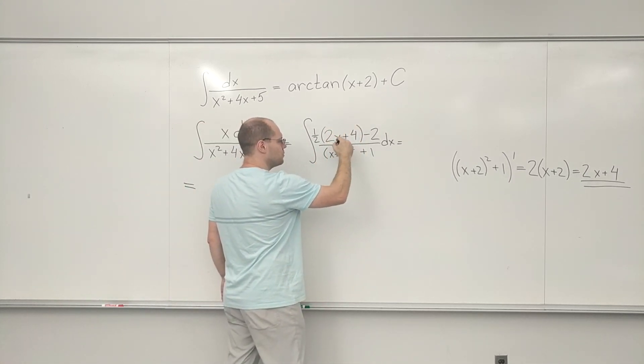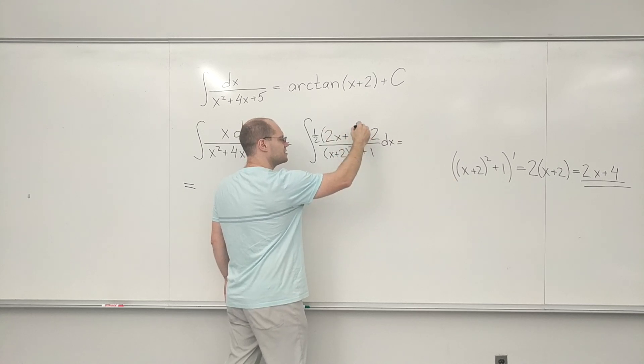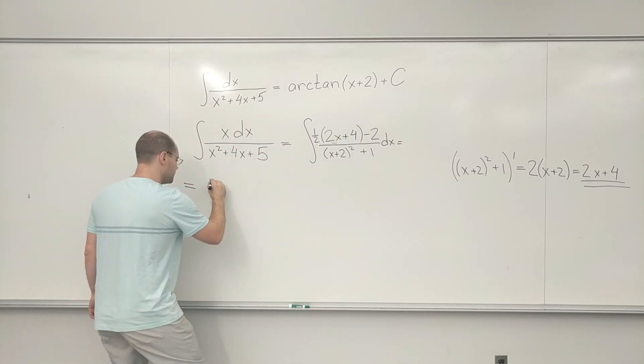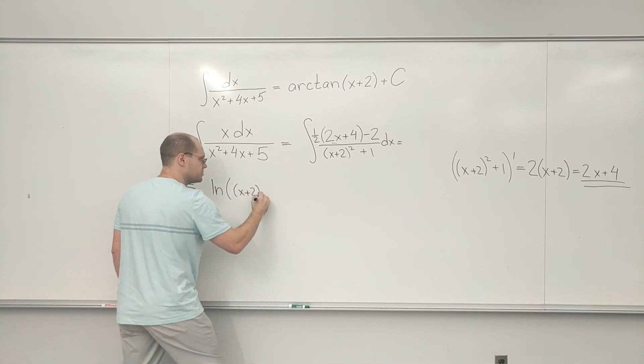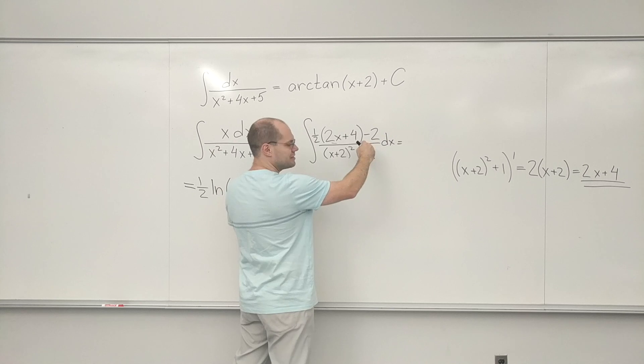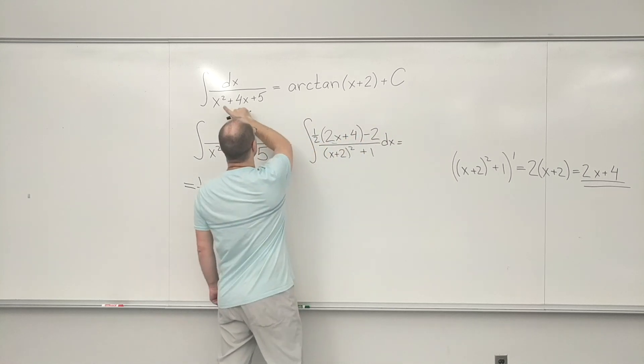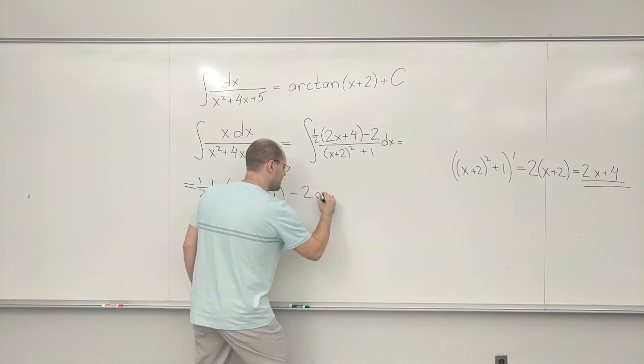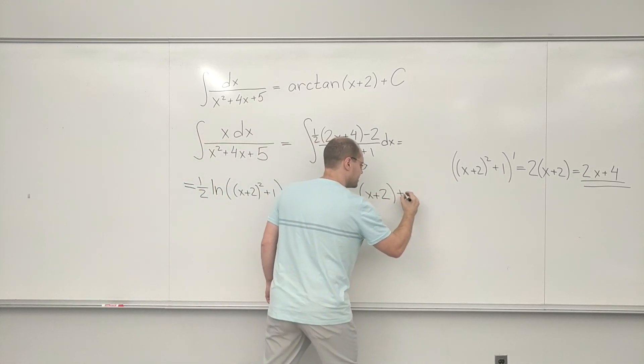So we already discussed what we would have if it was strictly 2x plus 4 on top. We would have log. And then separately, because I'm essentially breaking out this fraction of the numerator, it will be minus 2, what we discussed just a moment ago. Plus a constant.